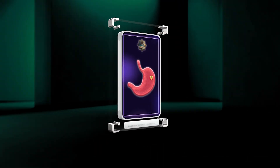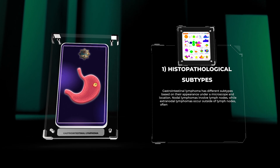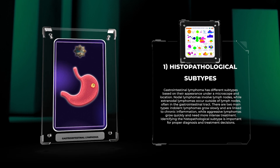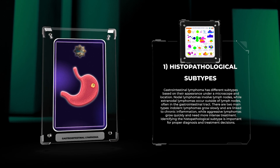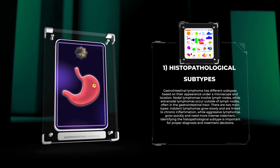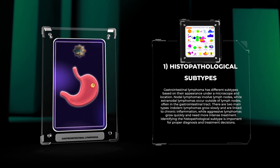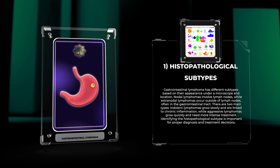Gastrointestinal lymphoma has different subtypes based on their appearance under a microscope and location. Nodal lymphomas involve lymph nodes, while extranodal lymphomas occur outside of lymph nodes, often in the gastrointestinal tract. There are two main types: indolent lymphomas, which grow slowly and are linked to chronic inflammation, and aggressive lymphomas, which grow quickly and need more intense treatment. Identifying the histopathological subtype is important for proper diagnosis and treatment decisions.